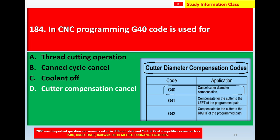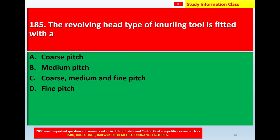Here, CNC G-codes and their applications: G40 cancels cutter diameter compensation. G41 compensates for the cutter to the left of the program path. G42 compensates for the cutter to the right of the program path. For question 184, G40 code is used for cutter compensation cancel.